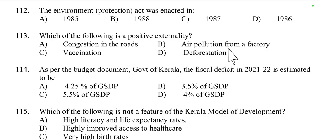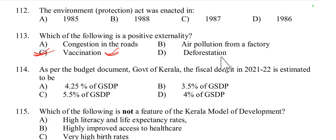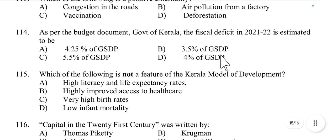Question 113: Which of the following is a positive externality? Congestion on roads — negative externality. Air pollution from a factory — negative externality. Vaccination — positive externality, as it creates a positive impact on society by keeping people healthy. Deforestation — negative externality. Option C, vaccination, is the positive externality.